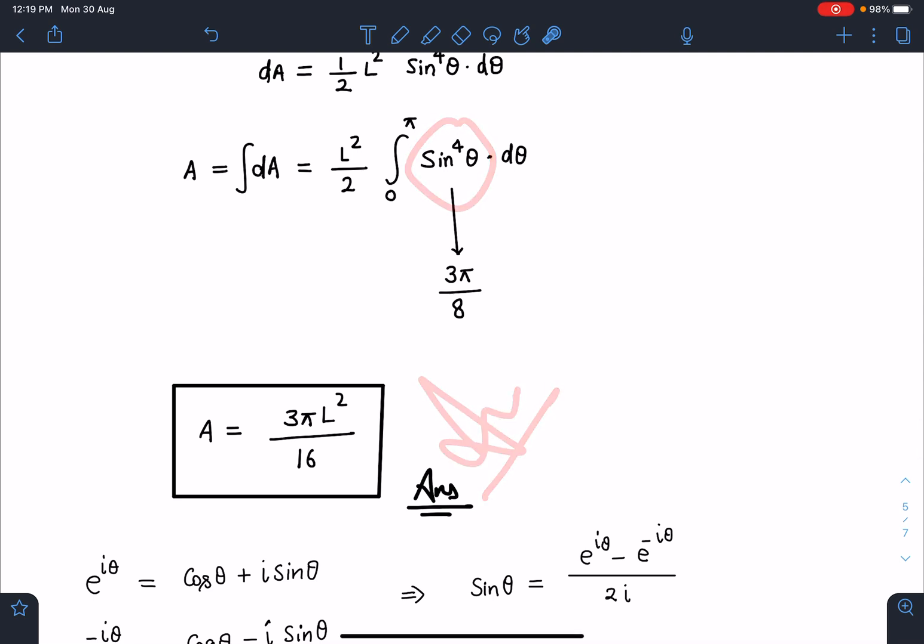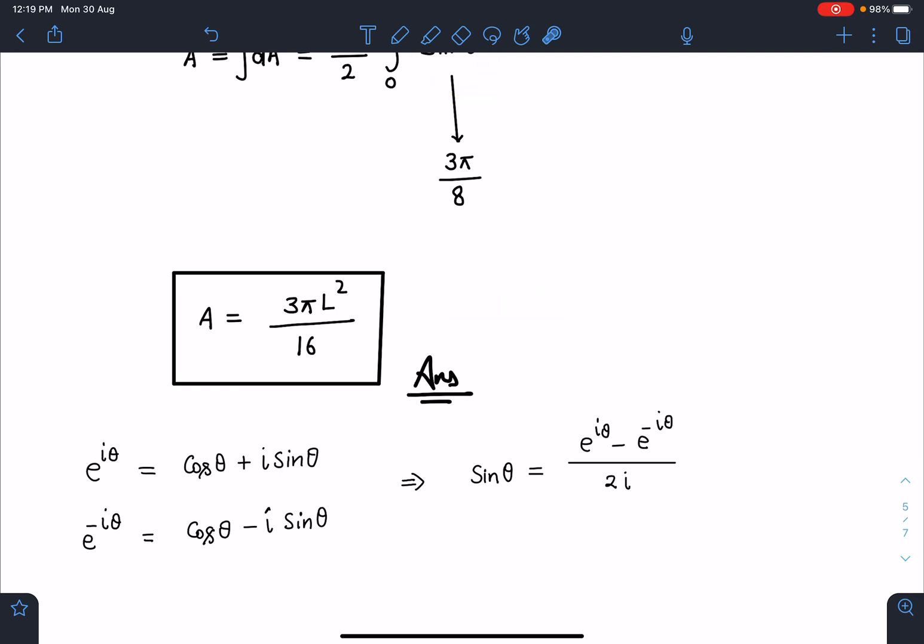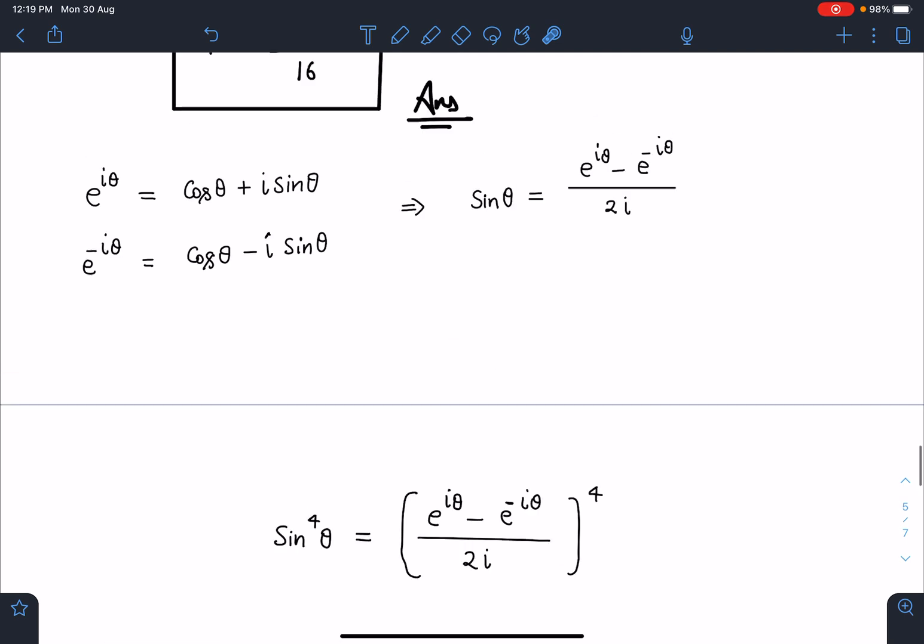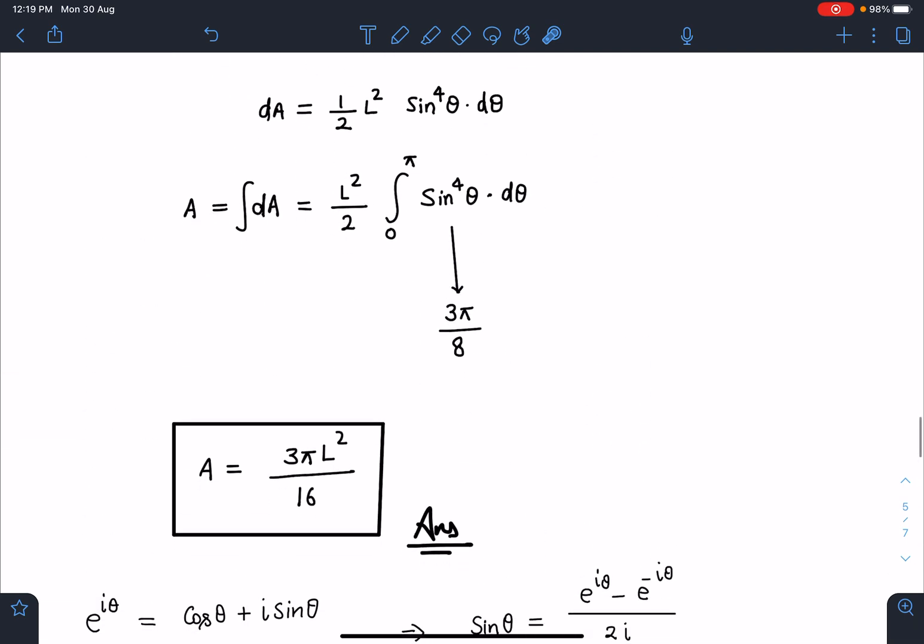I'll just give the hint to calculate this integral. You can use complex form to find it. e^(iθ) = cos θ + i sin θ and e^(-iθ) = cos θ - i sin θ. If you subtract these two, you get the value of sin θ. We're writing exponential functions because their integrals are very easy to calculate. You can write the value of sin⁴θ, expand it, and when you integrate, you can easily integrate all the terms.